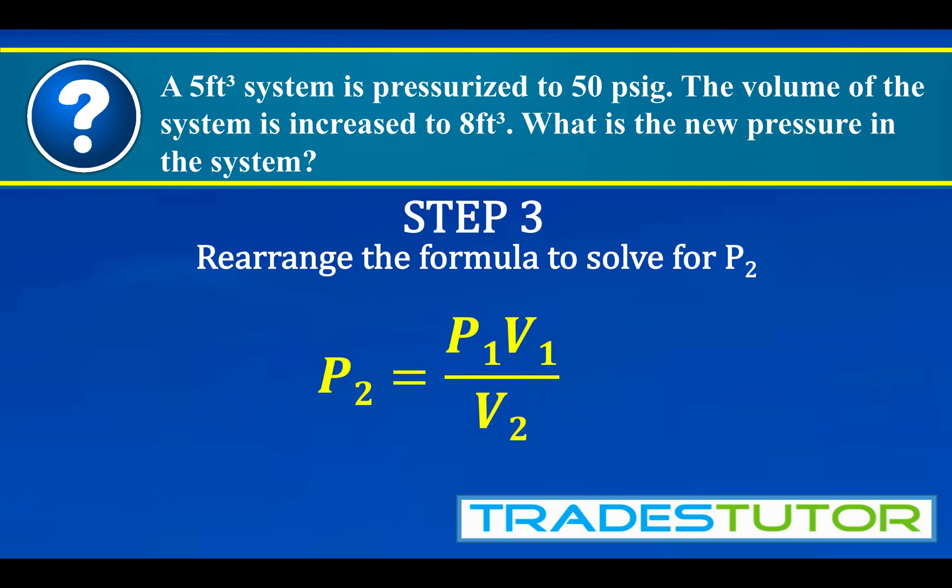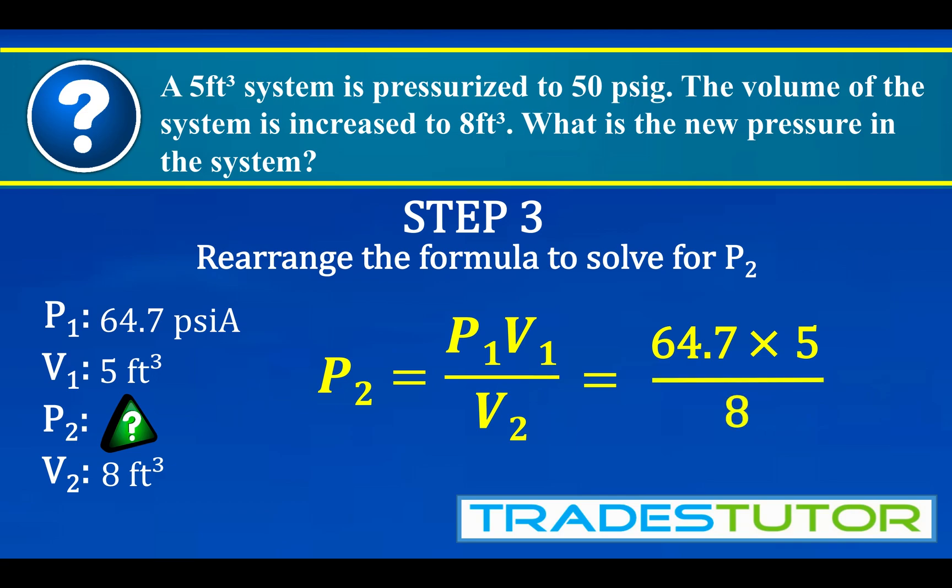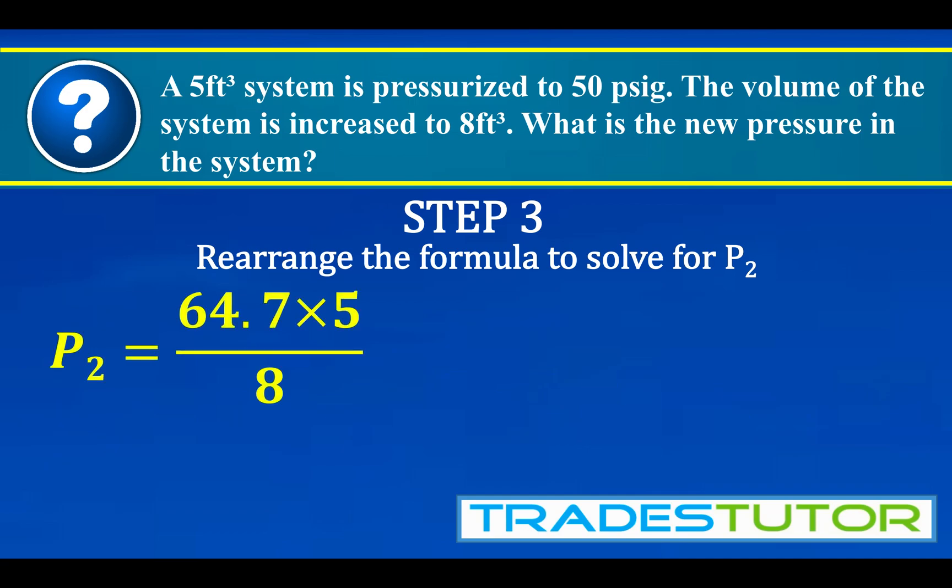All right, there you go. So now we just start to plug in the variables. We'll bring them back. There they are. And 64.7 times 5 divided by 8. Simple as that. When it all works out, we get 40.44.